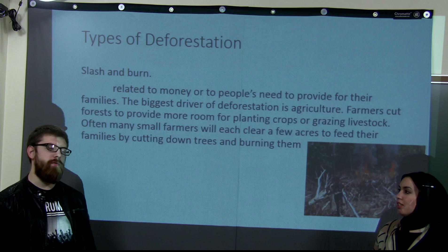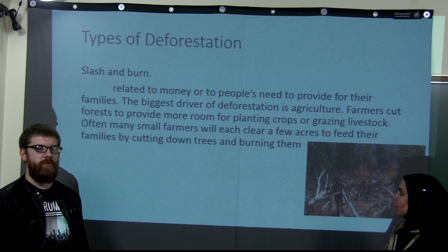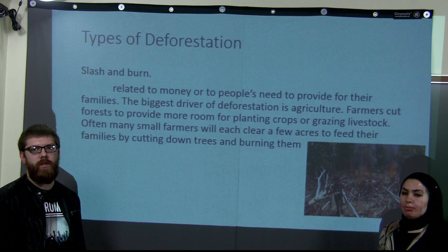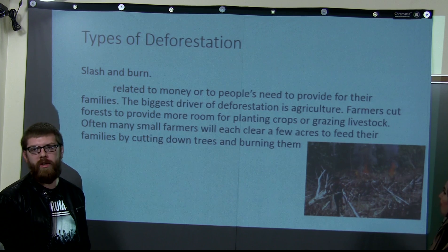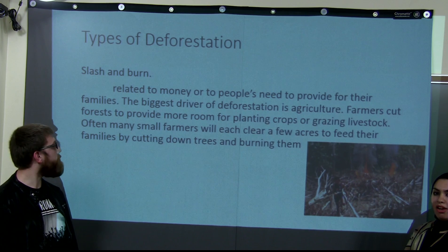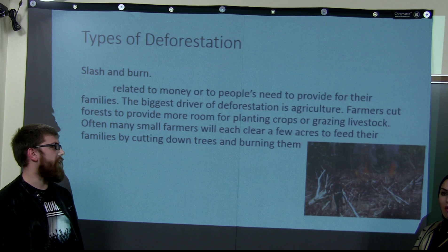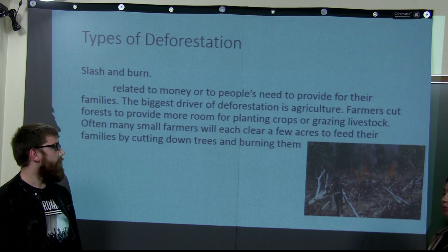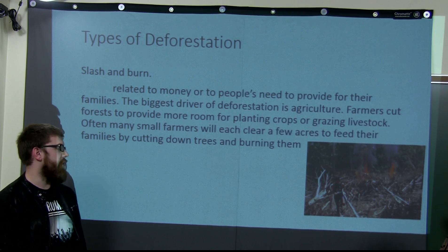There are different types of deforestation, such as slash and burn. These are related to people wanting more money and providing for their families. The biggest driver of deforestation is agricultural. Farmers cut down forests to provide more room for planting crops and grazing livestock. Small farms will often clear a few acres each year to feed their families by cutting down trees and burning them.